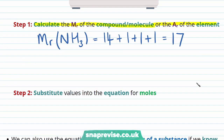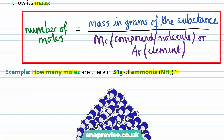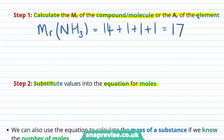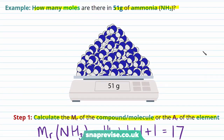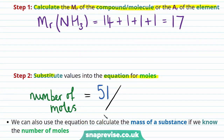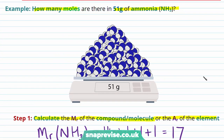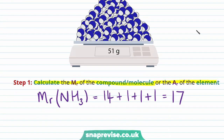Once we have our relative formula mass, we substitute our values into the equation: number of moles equals mass in grams divided by relative formula mass. So the number of moles of ammonia equals 51 divided by 17, which gives us 3. Therefore, there are 3 moles of ammonia in 51 grams. If we measured out enough ammonia to weigh 51 grams, it would contain 3 moles, and therefore 3 times 6.02 times 10 to the 23 ammonia molecules.